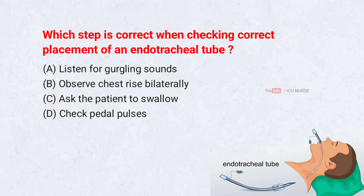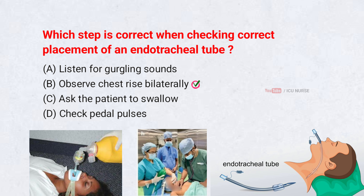Which step is correct when checking correct placement of an endotracheal tube? A. Listen for gurgling sounds. B. Observe chest rise bilaterally. C. Ask the patient to swallow. D. Check pedal pulses. Correct answer: B. Observe chest rise bilaterally. Bilateral chest rise indicates the tube is in the trachea, not in one bronchus or the esophagus.